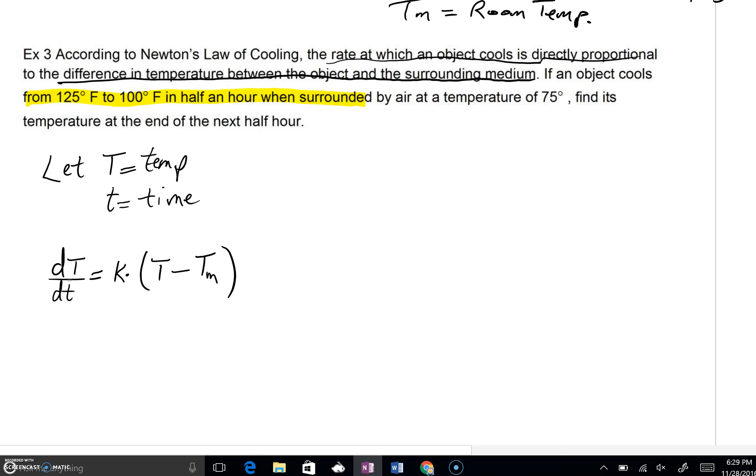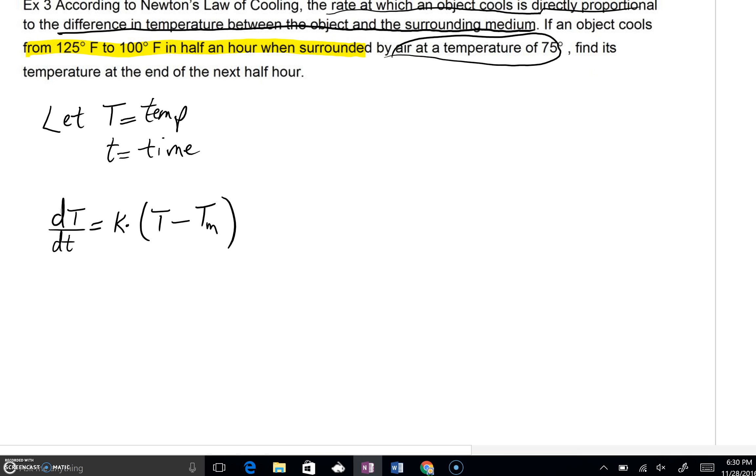As we begin to read this problem through, if an object cools from 125 degrees Fahrenheit to 100 degrees Fahrenheit in half an hour when surrounded by air at a temperature of 75 degrees, that being surrounded by air at a temperature of 75 degrees is implying that that's the surrounding medium, that's the room temperature. So what we can do immediately right here is take dT over little dt, K times, well we've got the temperature of the object, the surrounding medium or the room temperature is 75.